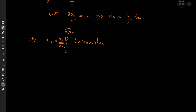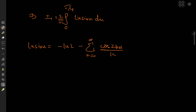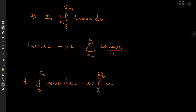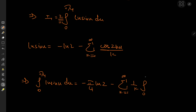To evaluate this, we invoke the series expansion for log(sin u): log(sin u) = −log 2 − Σ_{k=1}^∞ cos(2ku)/k. So the integral from 0 to π/4 of log(sin u) du equals −log 2 · (π/4) minus the sum over k of (1/k) times the integral from 0 to π/4 of cos(2ku) du, switching the order of integration and summation.